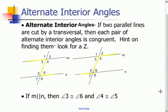We are going to talk about alternate interior angles and what happens when we have parallel lines. So if two parallel lines are cut by a transversal, then each pair of alternate interior angles is congruent.